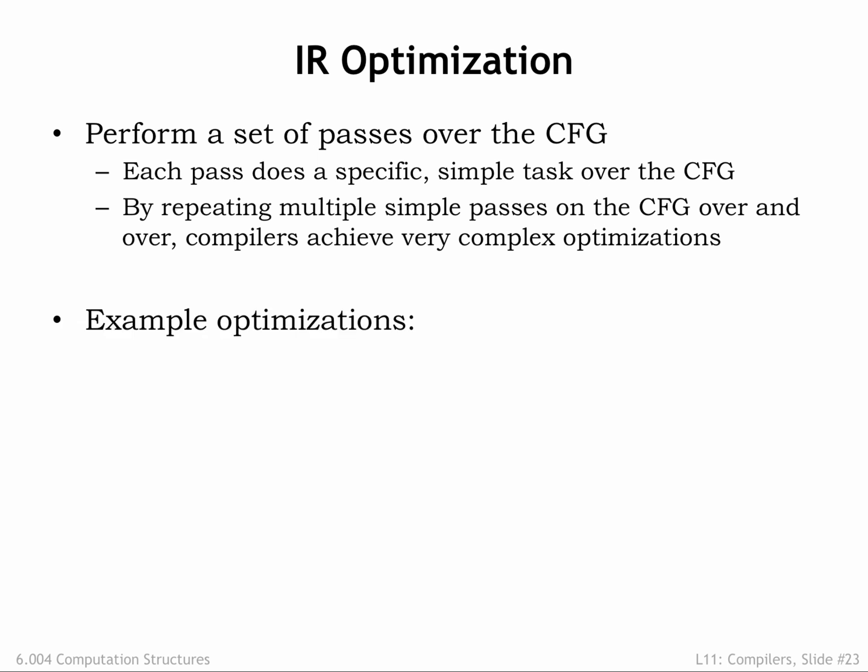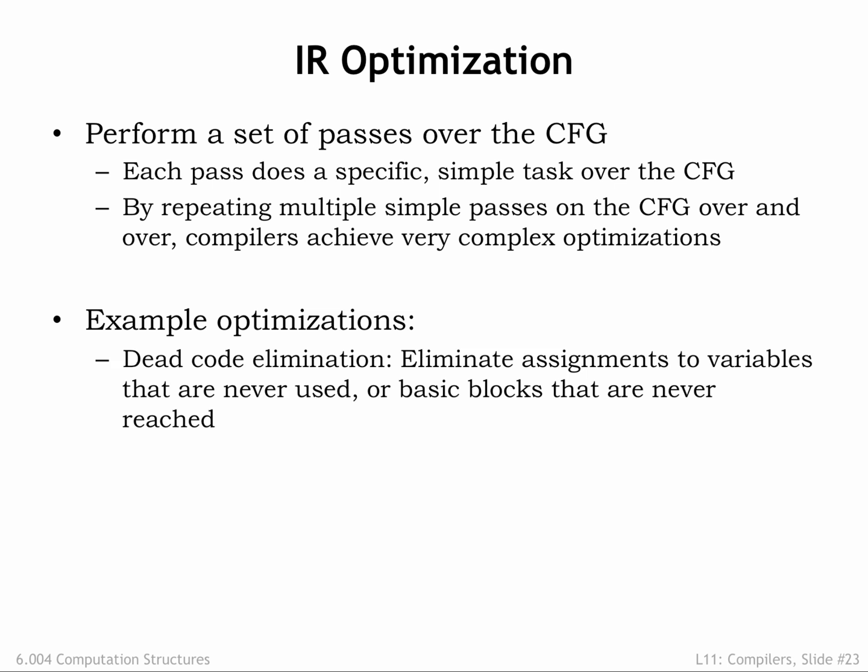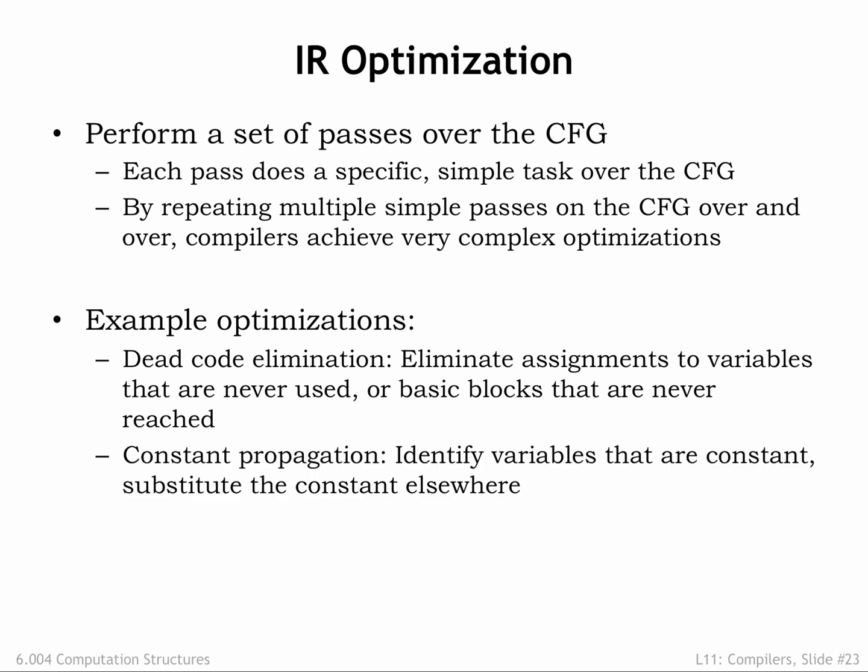Here are some example optimizations. We can eliminate assignments to variables that are never used and basic blocks that are never reached. This is called dead code elimination. In constant propagation, we identify variables that have a constant value and substitute that constant in place of references to the variable. We can compute the value of expressions that have constant operands. This is called constant folding.